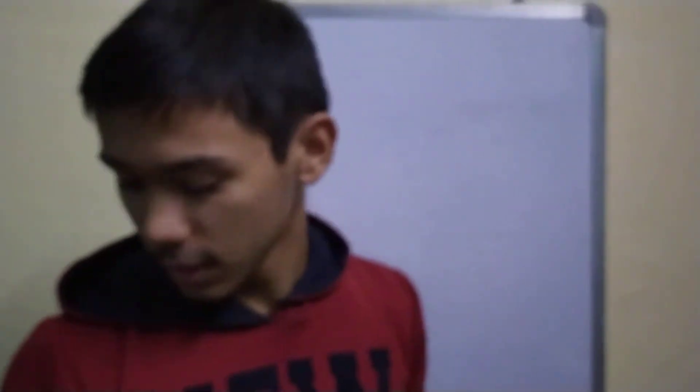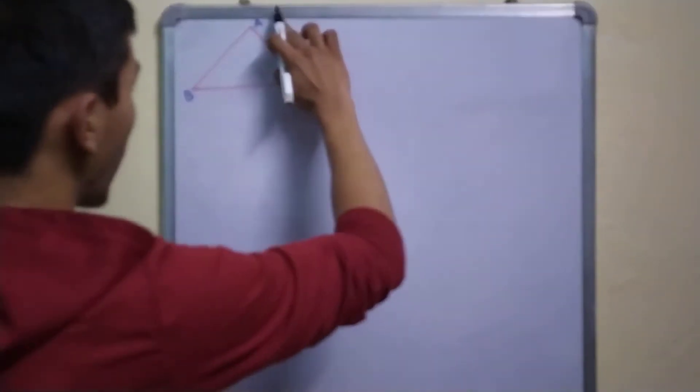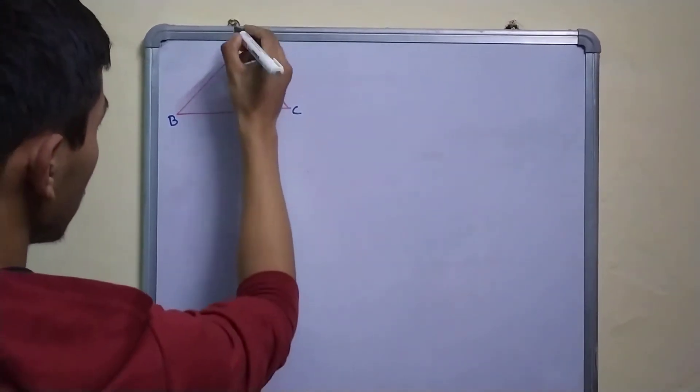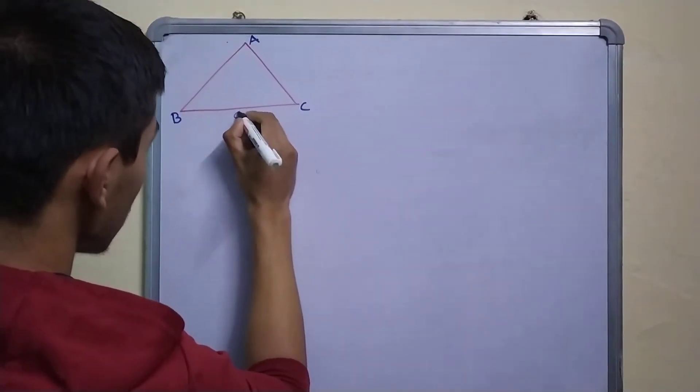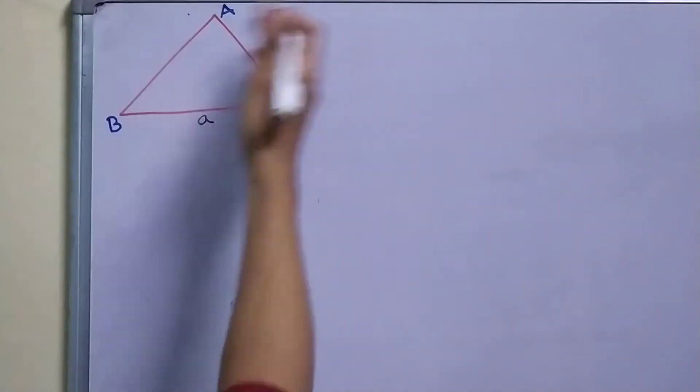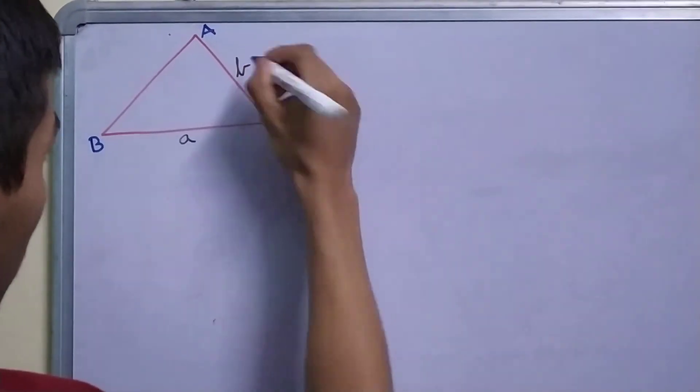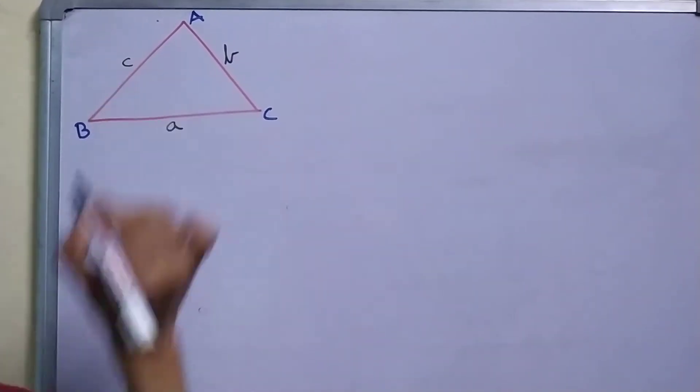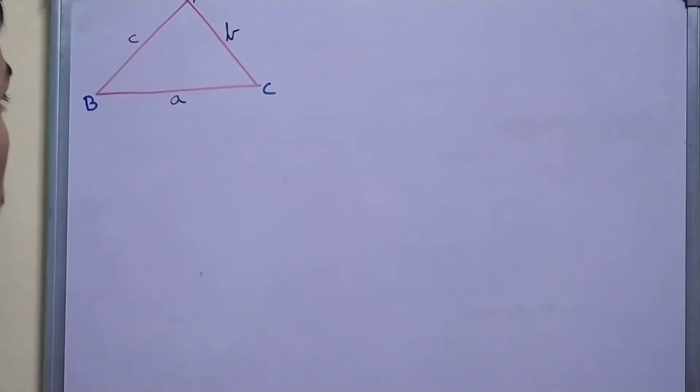And here's an important convention that's often used in math: the side opposite to angle A is called small a, the side opposite to B is labeled as small b, and the side opposite to angle C is labeled as small c or lowercase c.